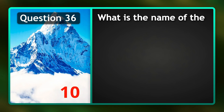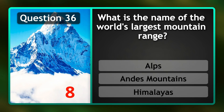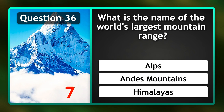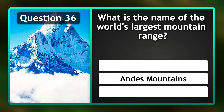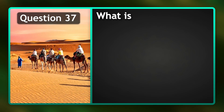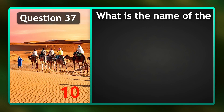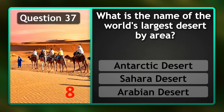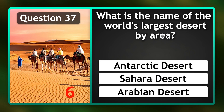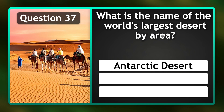What is the name of the world's largest mountain range? Andes Mountains. What is the name of the world's largest desert by area? Antarctic Desert.